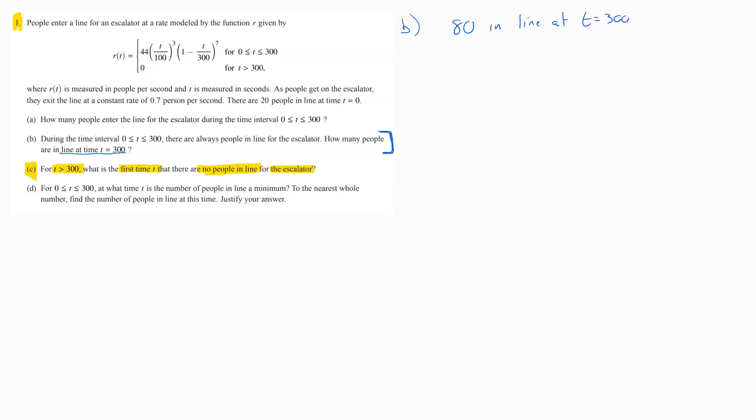And what we're trying to do is figure out when will that number basically shrink to zero. Because if you look up at your piecewise function, the people entering the line for the escalator when T is bigger than 300 is zero. So, we're not adding any new people to this line.